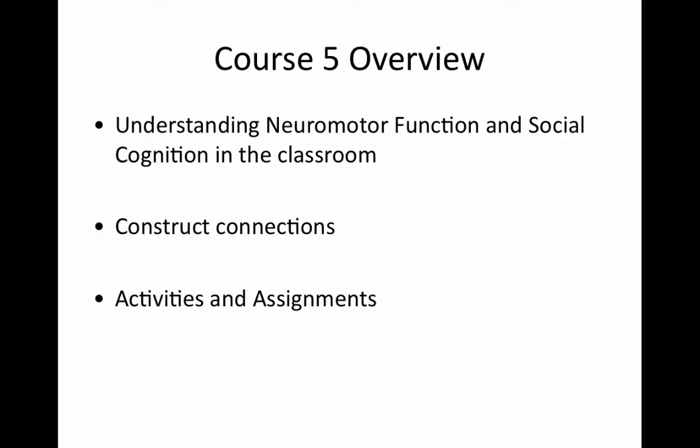This slide provides you with a broad overview of Course 5 to give everyone an idea of where we are headed. In addition to understanding the components of the constructs themselves, as in Course 3, we will think closely about how neuromotor function and social cognition operate in the classroom. In what ways might these constructs lead us to uncover hidden demands in learning tasks and assignments? What kinds of challenges might come up at school for students with weaknesses in these areas? And how can we support students in strengthening their weaknesses or strengths in neuromotor function and social cognition to support their learning and their participation in school?